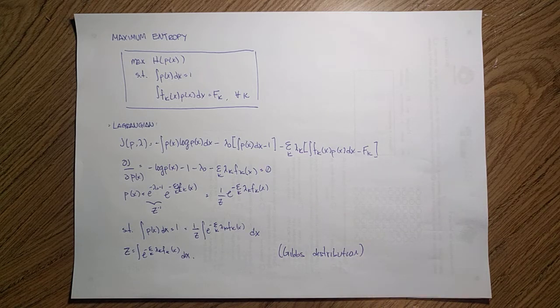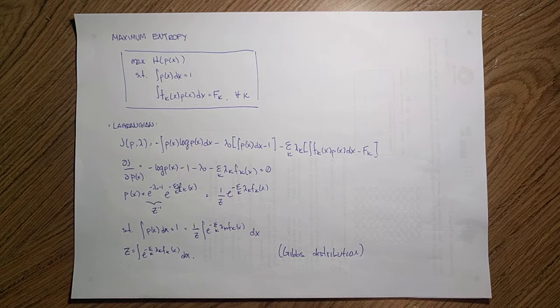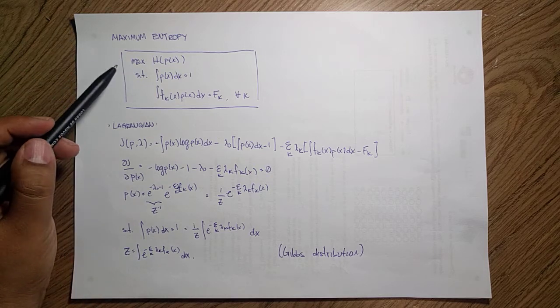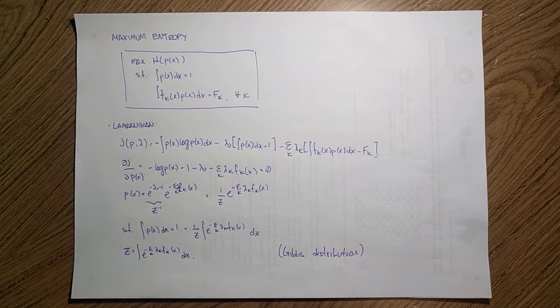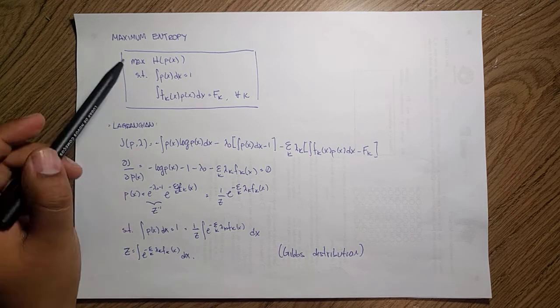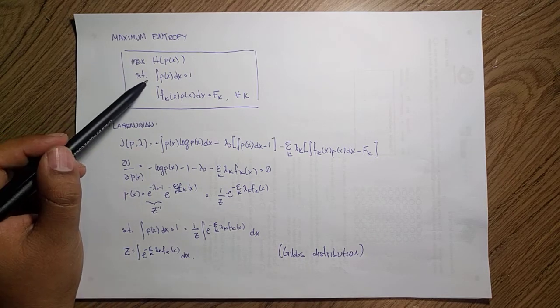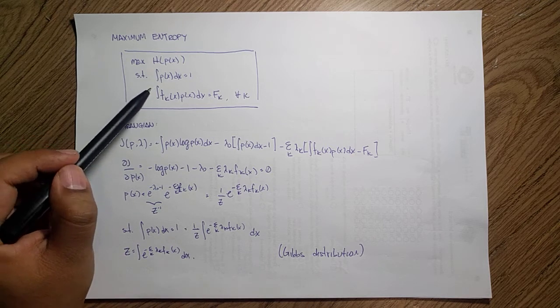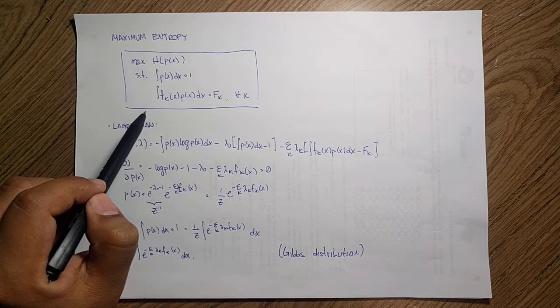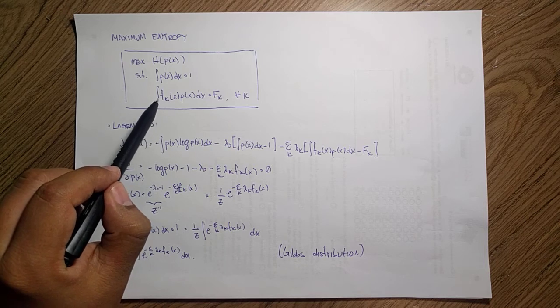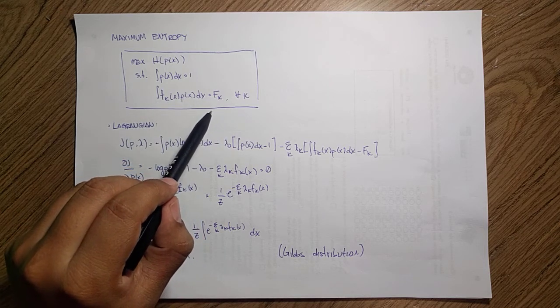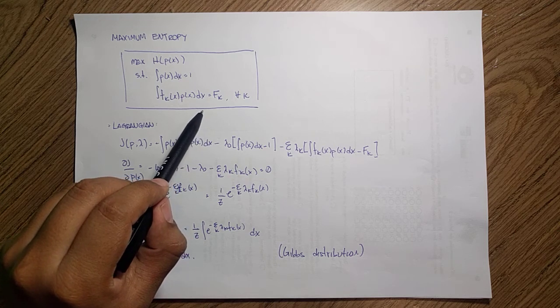We want to see why the exponential family has the shape it has. So we want to find the maximum entropy distribution. We want to maximize the entropy of a distribution p(x) subject to that distribution integrating up to 1 and such that it has some particular expected values.